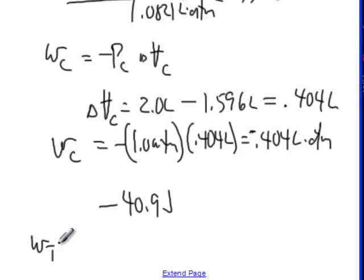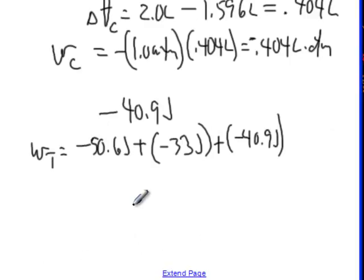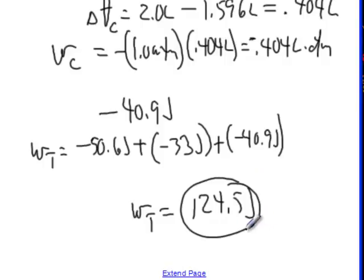So what's the total work? Well, it's the first stage work, stage A work, which was minus 50.6 joules, plus the second stage work, which was minus 33 joules, plus the third stage work, which was minus 40.9 joules. When you sum that all up, our total work when we do this in three steps is now 124.5 joules. That's more than it was when we had two steps. That was 118. And that's more than it was when we had one step, and that's when it was 101. So what seems to be happening here is the more steps we do this in, the more work we get out.